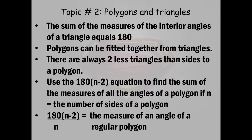Our second last topic is polygons and triangles. One thing to remember is that the sum of the measures of the interior angles of a triangle equals 180. Remember angles are on the inside of a triangle, not the outside. The outside is sides, angles inside.